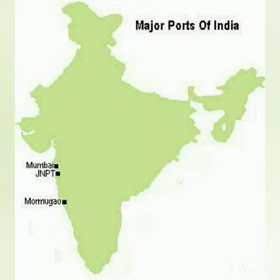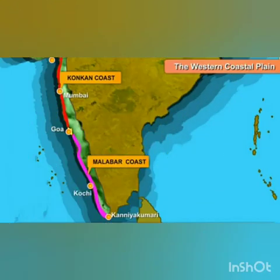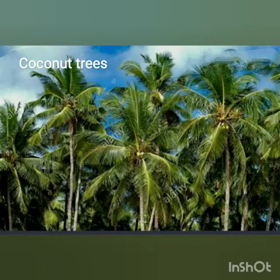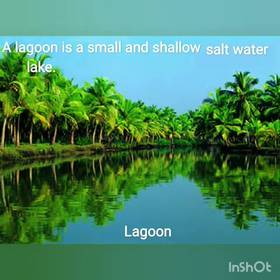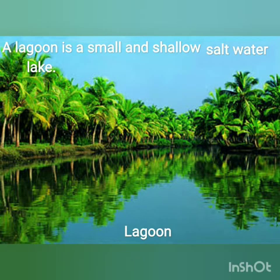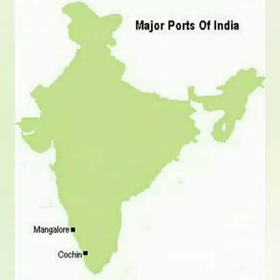Mumbai is the busiest seaport of India. The southern part of the western coastal plain is called the Malabar coast. It lies between Goa and Kanyakumari. Here, coconut trees are found in abundance. Lagoons are also found here. A lagoon is a small and shallow saltwater lake. Kochi and Mangalore are the major seaports.